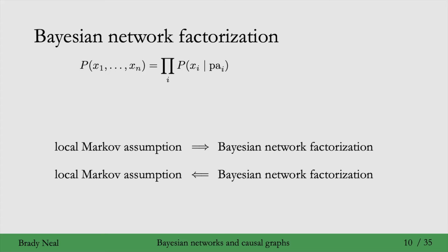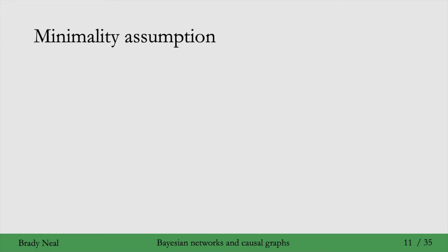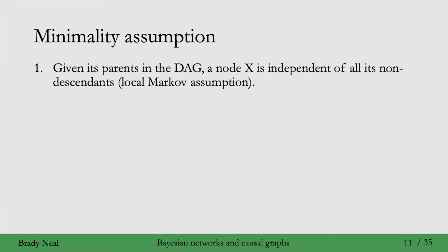And you can see proofs for this kind of stuff, for example, in chapter 3 of Kohler and Friedman, which is a probabilistic graphical modeling book. Another important assumption that we will be using when we write graphs in this course is the minimality assumption. The minimality assumption has two parts. So the first part is just the local Markov assumption.